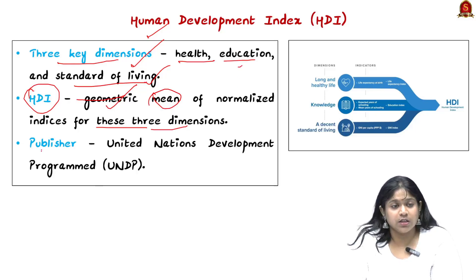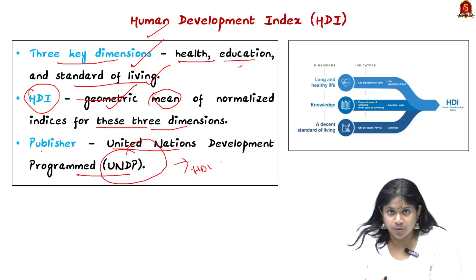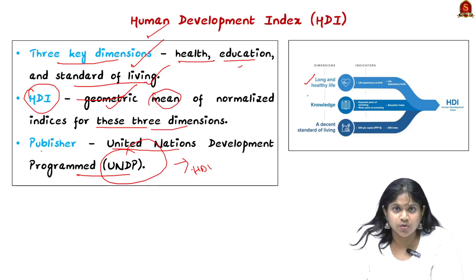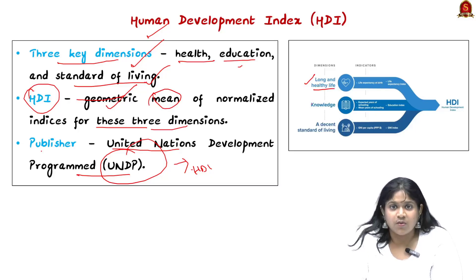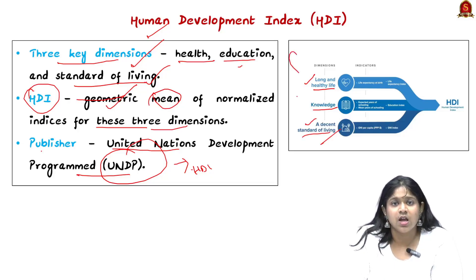The publisher of this report is the United Nations Development Programme, UNDP, and the HDI is published per year. The criteria across the three key dimensions are: for health, a long and healthy life; for education, knowledge; and for standard of living, how a decent standard of living is being provided.